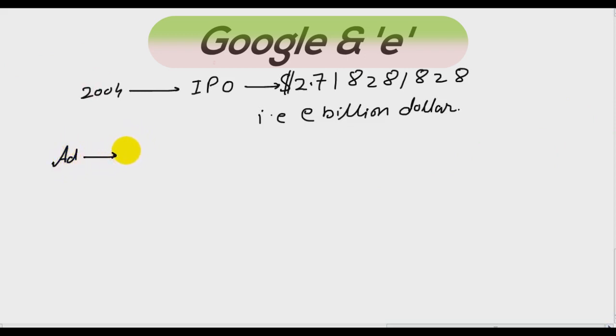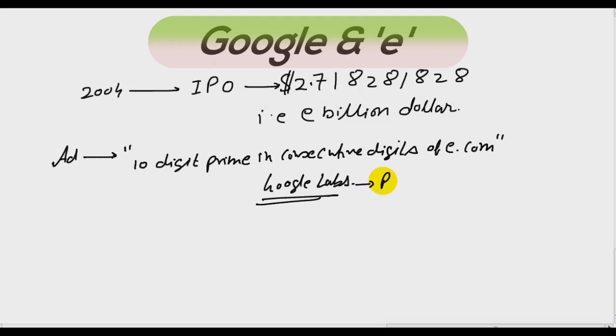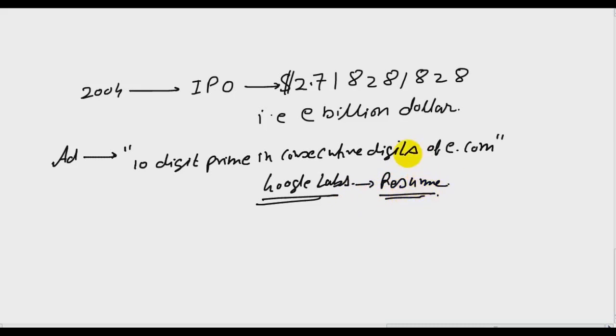So they said they are raising e billion dollars. In one of their ad campaigns for recruitment, they advertised like this: first 10-digit prime in consecutive digits of e dot com. This is a puzzle. If you write the solution of this puzzle in your URL, you will reach to Google Labs where you can submit your resume for applying for Google. So this is the way Google uses e.